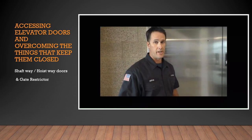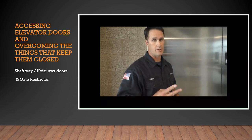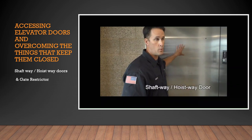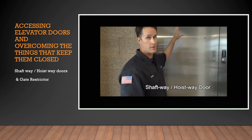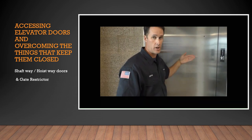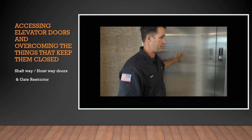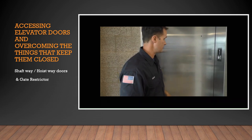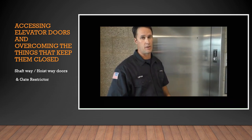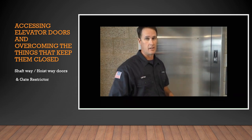It's important to identify that there are two doors in an elevator system: the shaft door, found on each level of the building, and the elevator car door. The first one we need to overcome is the elevator shaft door. To do that, we've already controlled the power, and then we need to identify the appropriate elevator key.